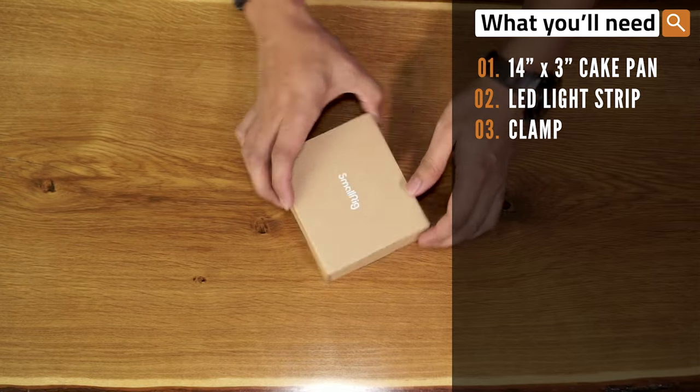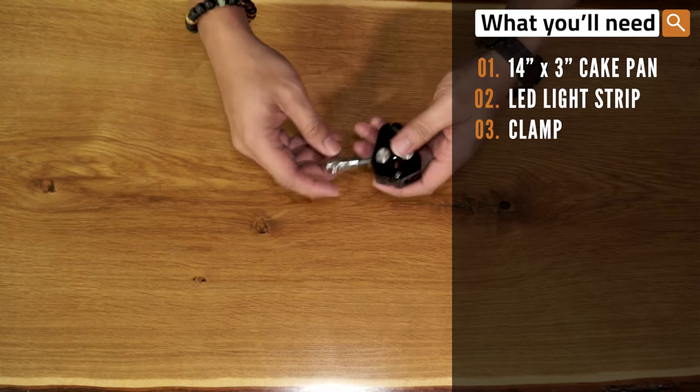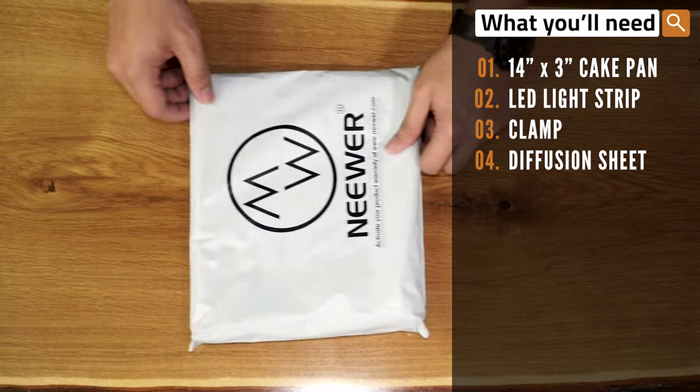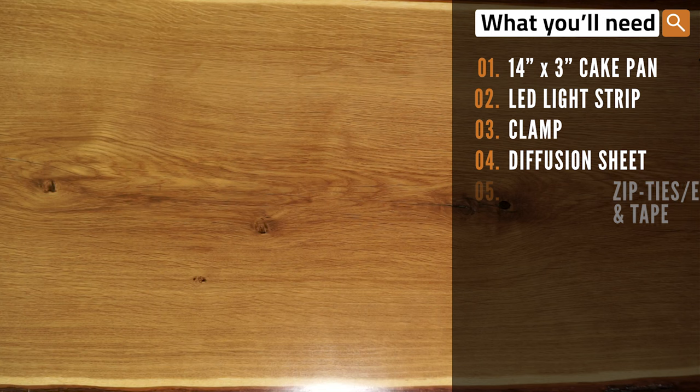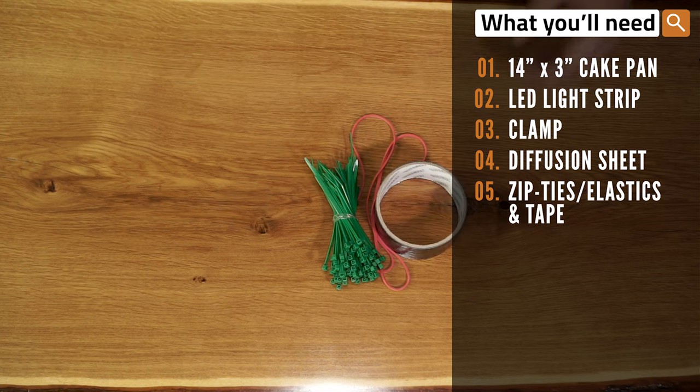You're also going to need a clamp to mount your DIY video light to your existing camera tripod stand, a diffusion sheet to the front of the cake pan to diffuse some of the lights from the LED light strip, and zip ties or some elastics and some tape to hold everything together.